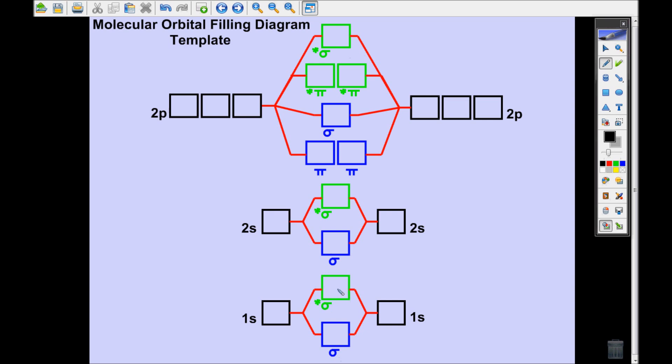Now when you combine that 2s—electrons in the 2s orbital—then you're going to get the same thing. You can have a sigma bonding lower in energy or a sigma antibonding higher in energy.